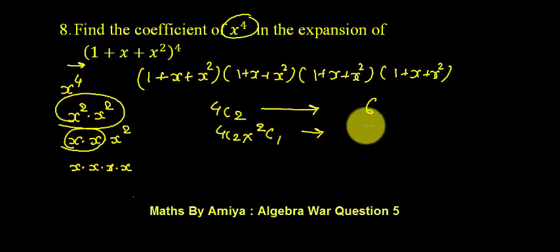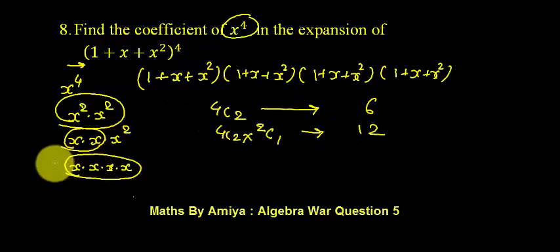And we have x, x, x, all of the same things. Out of four brackets we want 4 x terms. That is 4C4, which is nothing but 1.